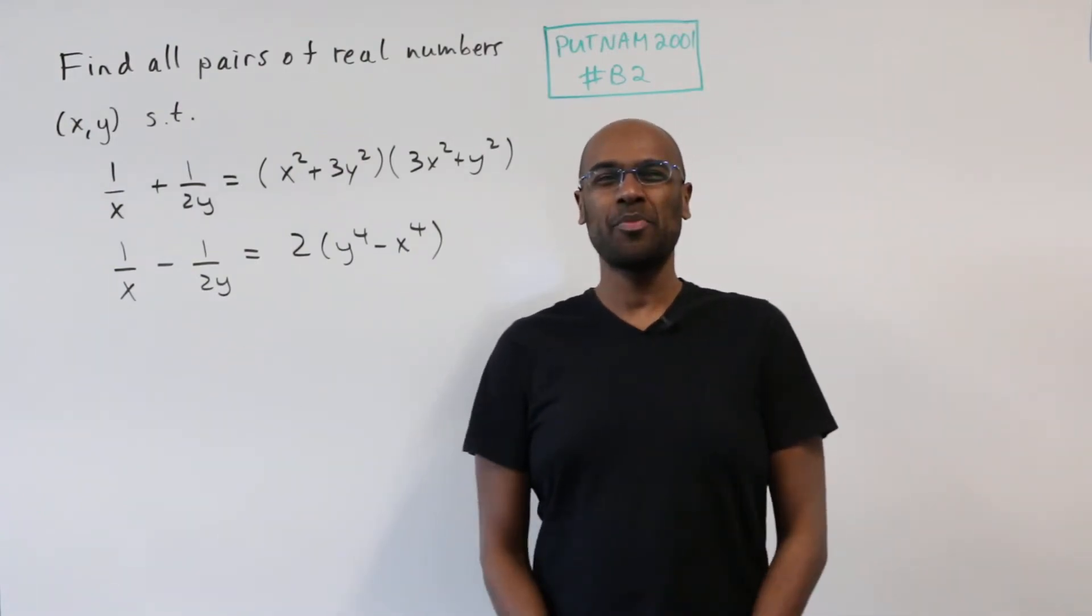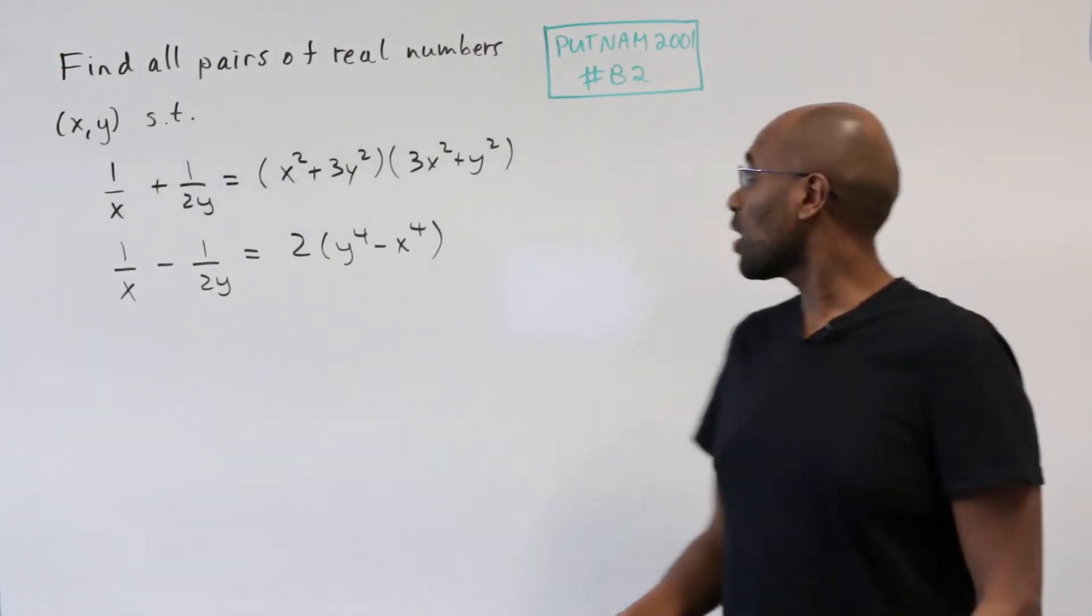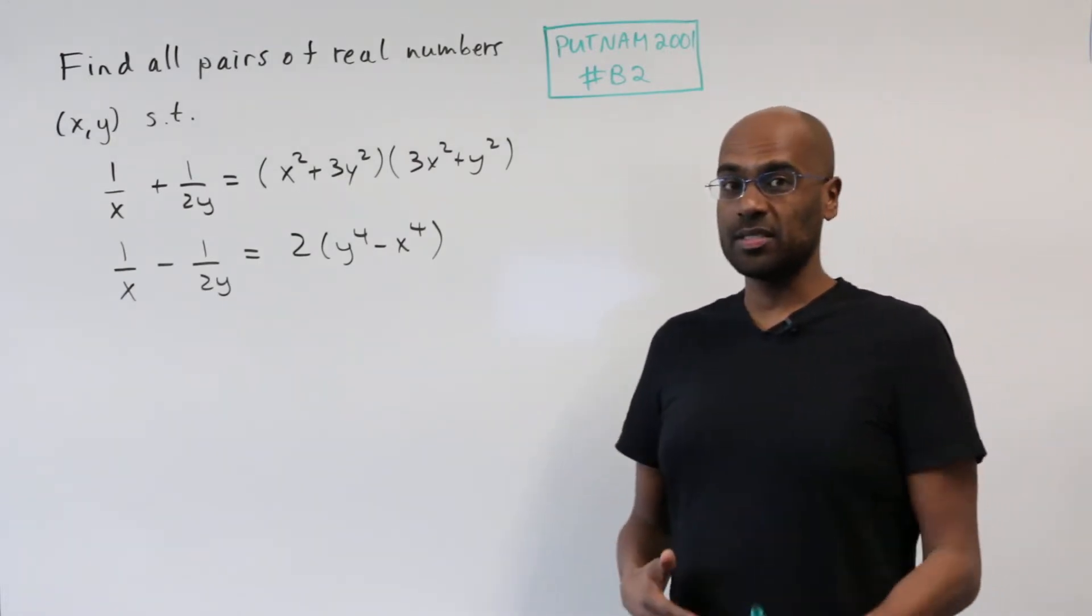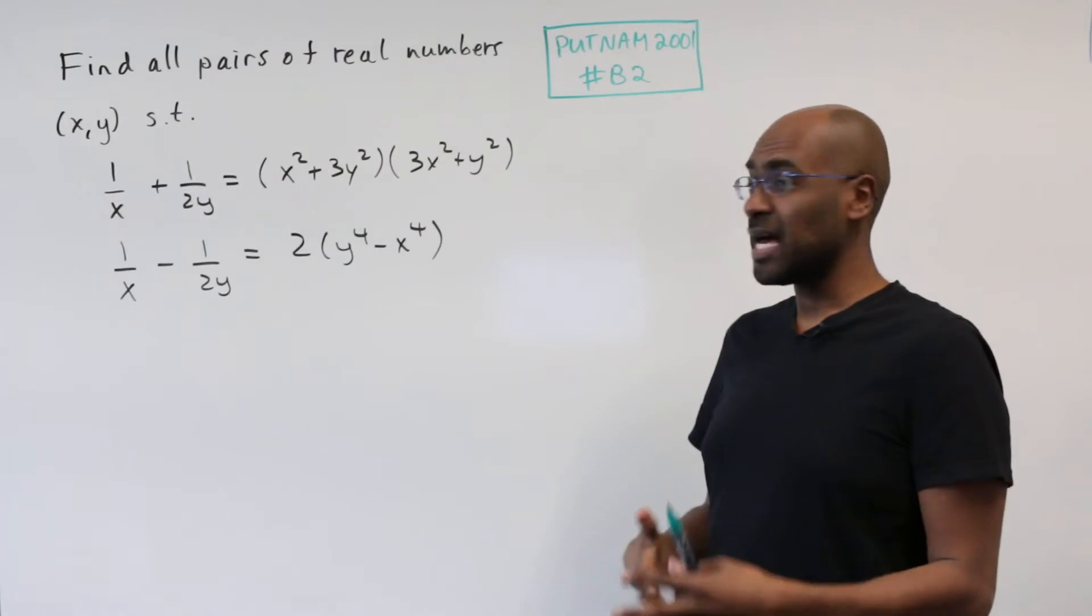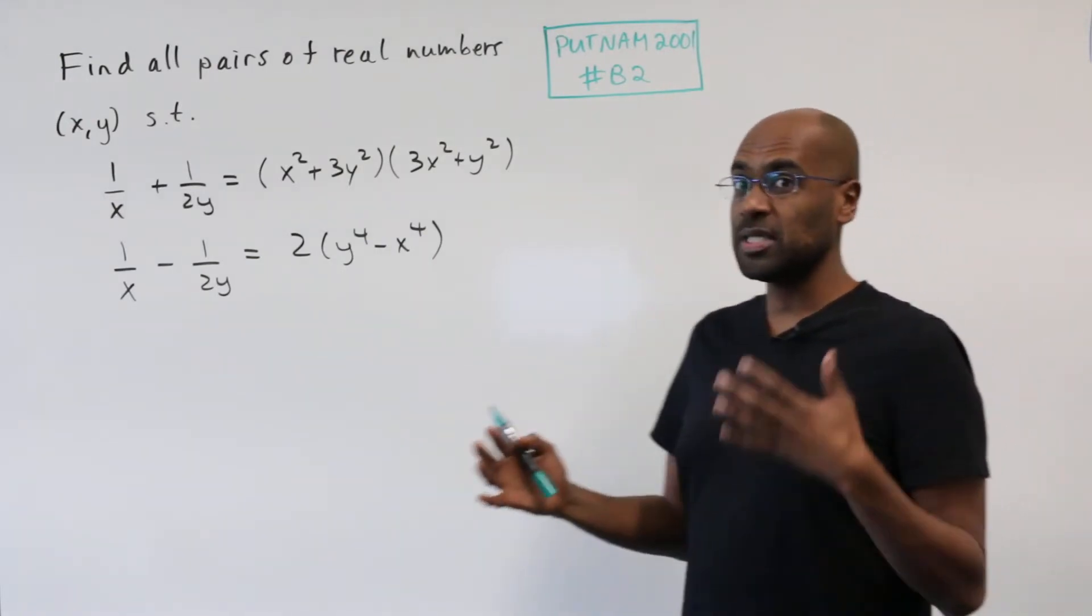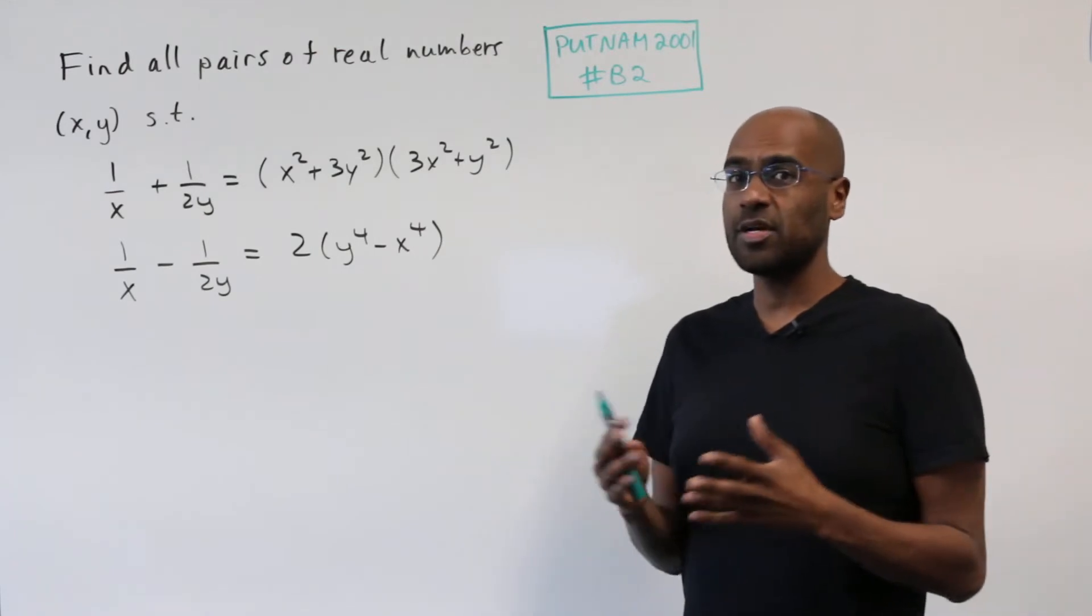Hey, welcome to today's video. I'm Prof. Omar and today we're going to work on Putnam 2001 number B2. This is a problem involving a system of equations that are rational functions in x and y and it's an interesting set of polynomial equations that has a very non-standard solution.